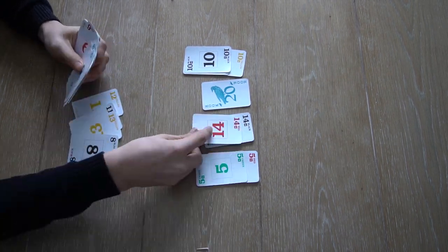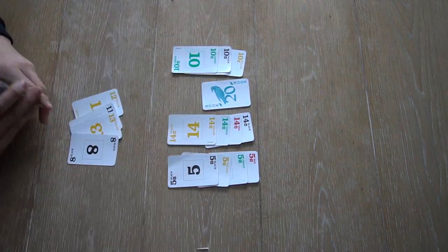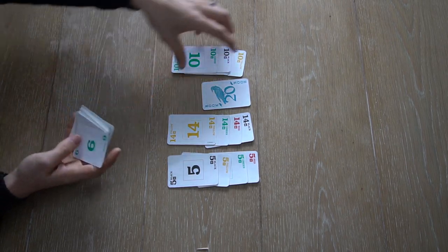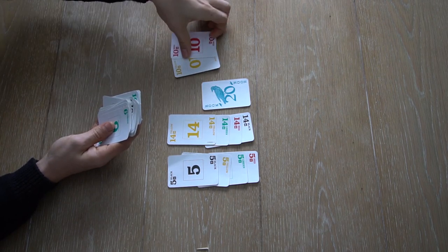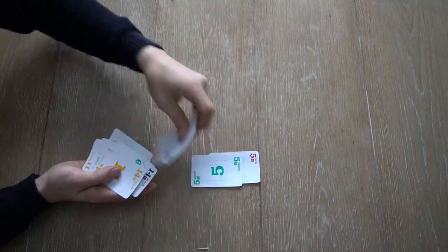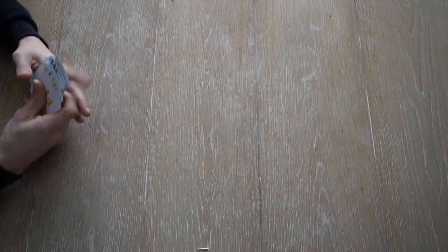To win, a team must get 300 points. The maximum amount of points that can be earned in one round is 120. Make sure to shuffle well. You will also need a piece of paper and something to write with to keep score.